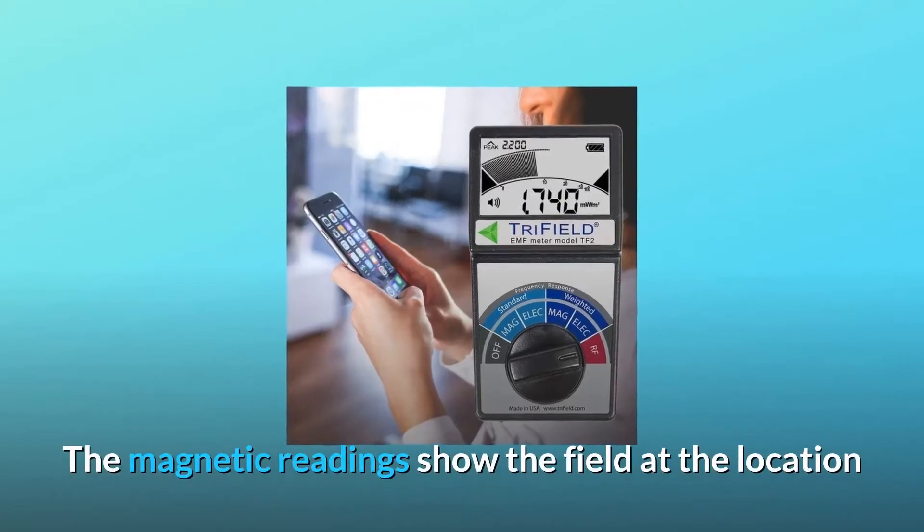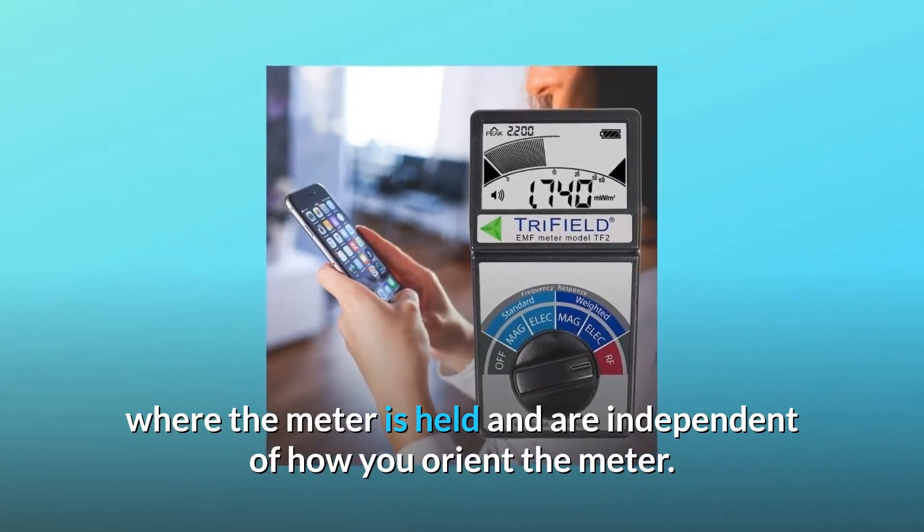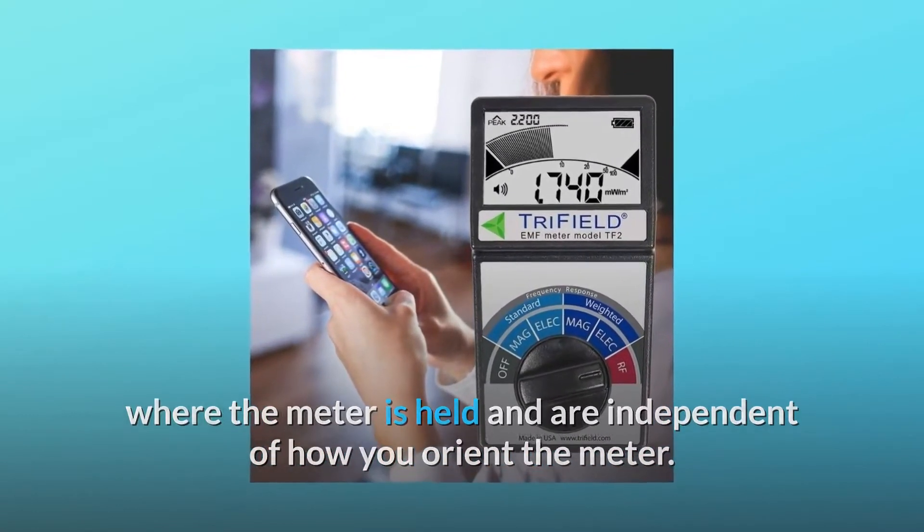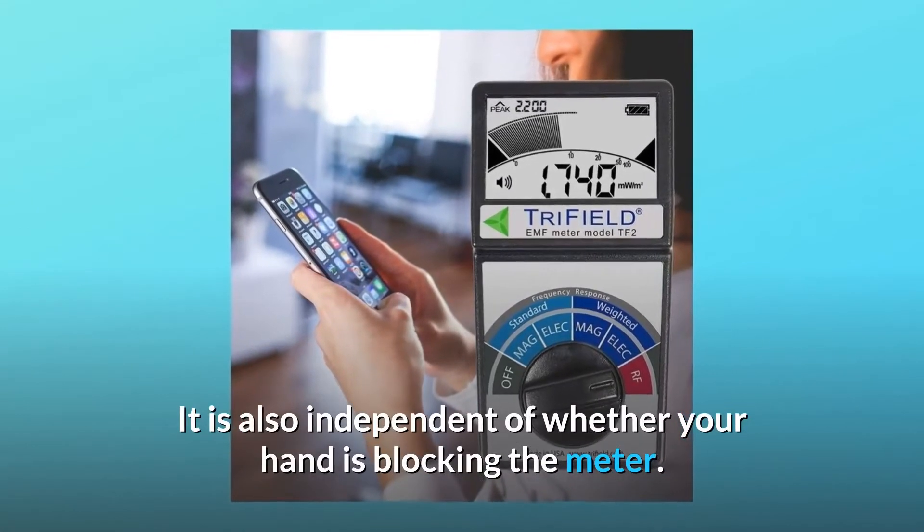The magnetic readings show the field at the location where the meter is held and are independent of how you orient the meter. It is also independent of whether your hand is blocking the meter.